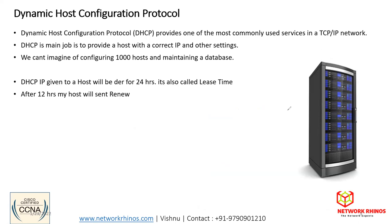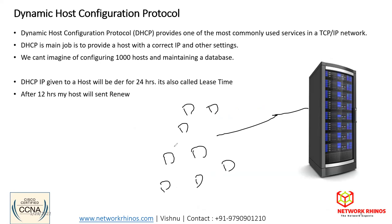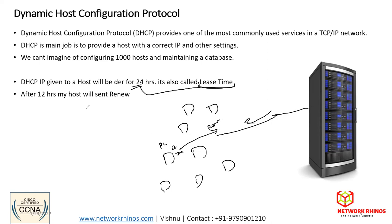Once a DHCP server gives an IP address to a computer, that IP address is allocated for 24 hours — this is called the lease time. At the 12-hour mark, the PC will send a renew packet to get another 24 hours. So every 12 hours, your devices will try to renew the IP address that the server gave them.